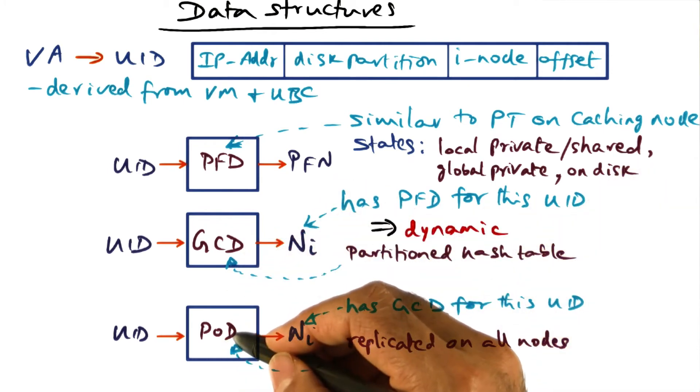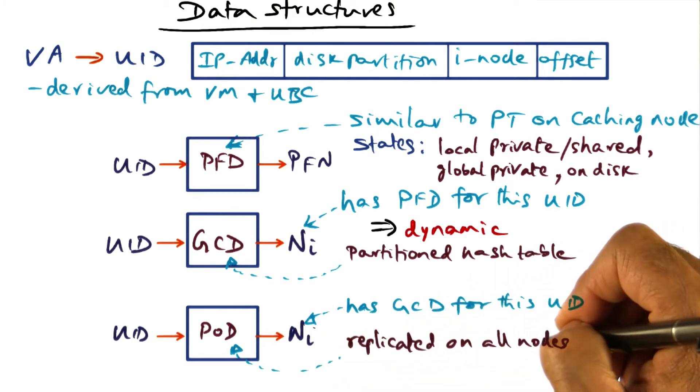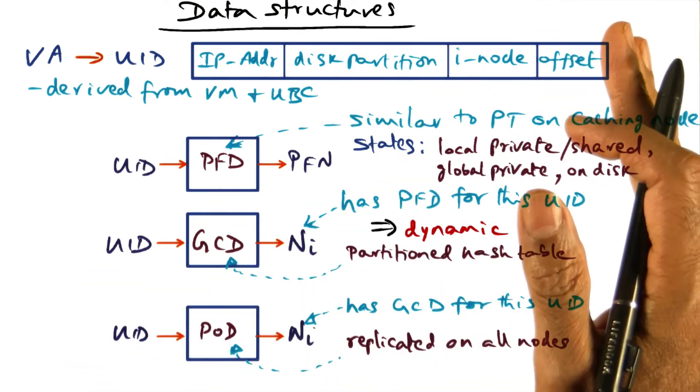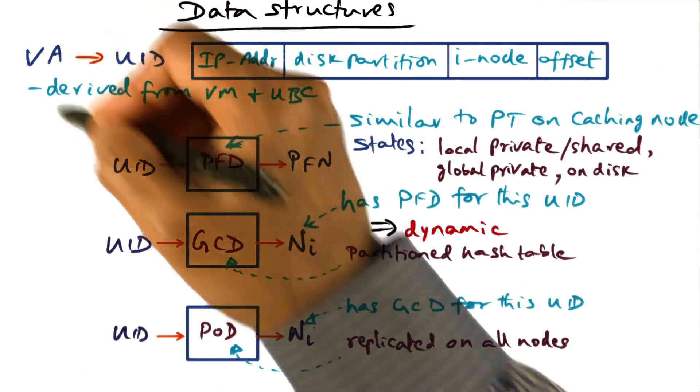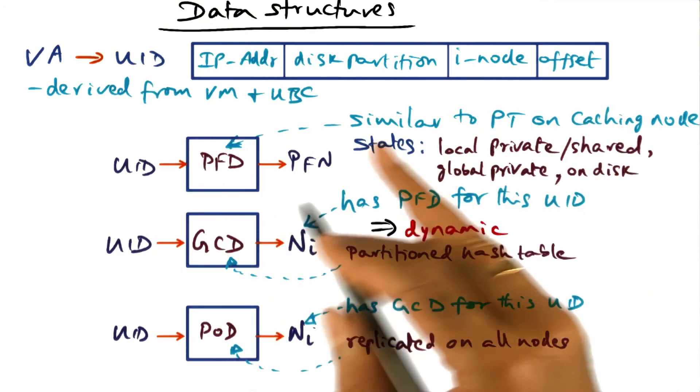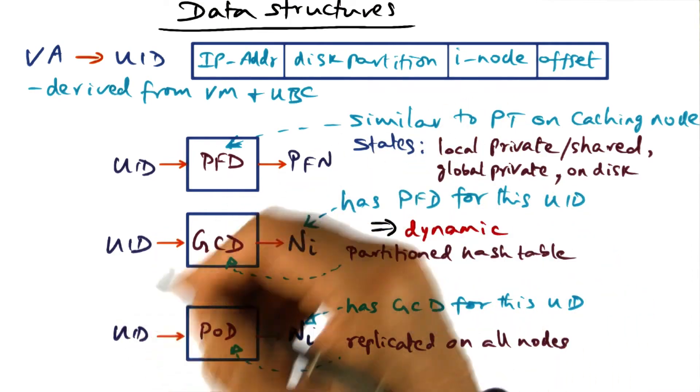I said that this page ownership directory is a replicated data structure. Can it change? Well, it can change over time because what this page ownership directory is saying is the following: The UID space is something that spans the entire cluster. If you take the virtual addresses of all the processes in the entire cluster, that universe of all the virtual addresses is this UID space.